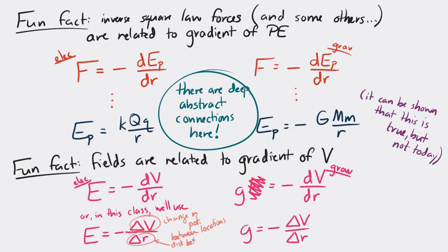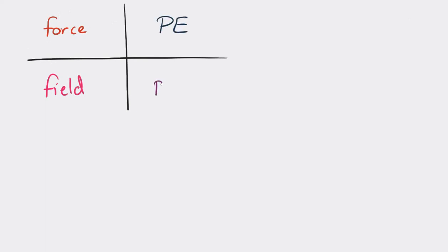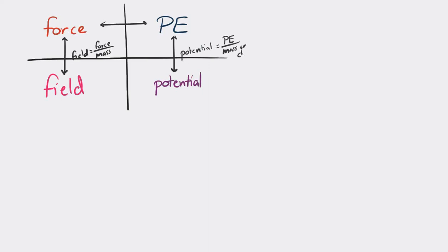There are deep and abstract relationships between force, field, potential energy, and potential. To summarize: field is force per charge or per mass; potential is potential energy per charge or mass. Force and potential energy are related because force equals the negative gradient of potential energy, and field is related to potential because field equals the negative gradient of the potential. These are all strange and abstract relationships between these quantities.